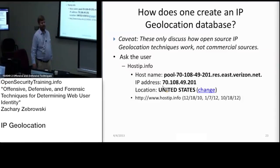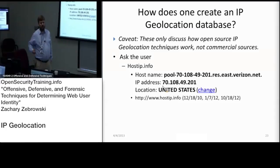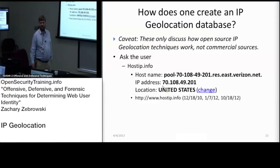Because of some non-disclosure type stuff, I'm going to talk about the open source techniques for creating this information. But we'll talk about the companies that provide this in a minute too. One way to do this is to ask the user — hostip.info basically says where are you, and it prompts you to enter your location. That's a reasonably good way of getting an IP address location.